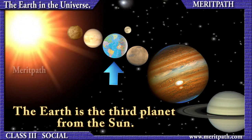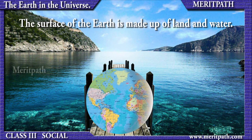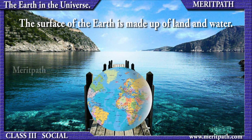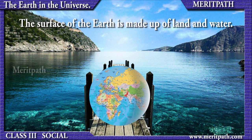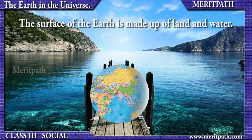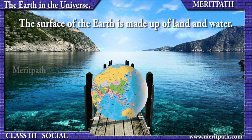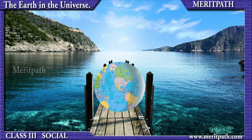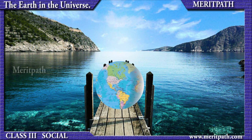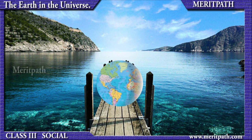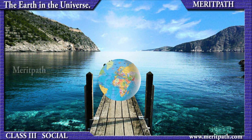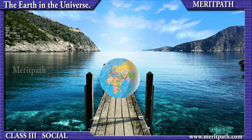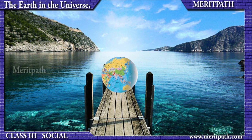Our planet Earth — the only known planet to have life — is the third planet from the Sun. The surface of the Earth is made up of land and water. Earth has an abundance of water, which makes it unique and perfect for life to exist. It is our home planet.